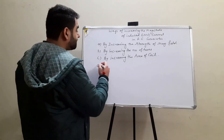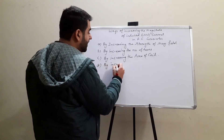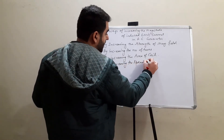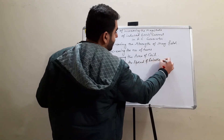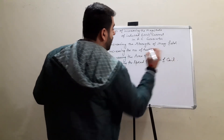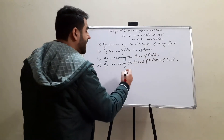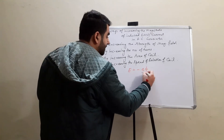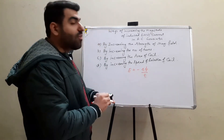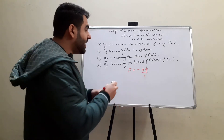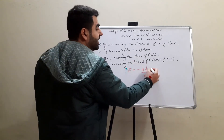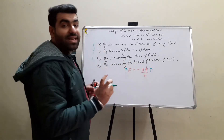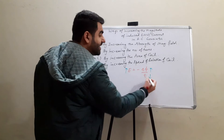The fourth method is by increasing the speed of rotation of the coil. From Faraday's law, it is very evident that EMF equals the rate of change of flux. To increase the EMF, we have to either increase the flux — which is addressed by the first three methods — or decrease the time.